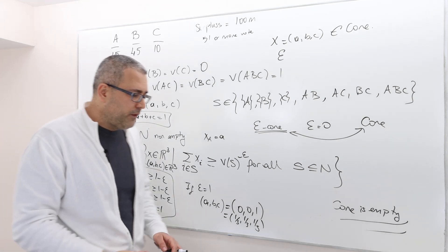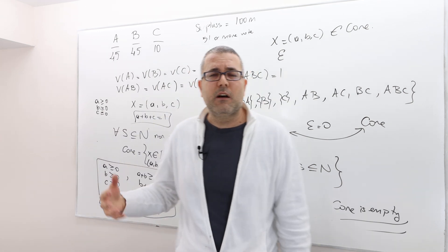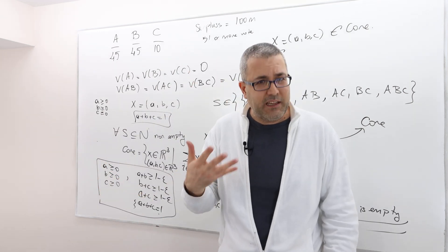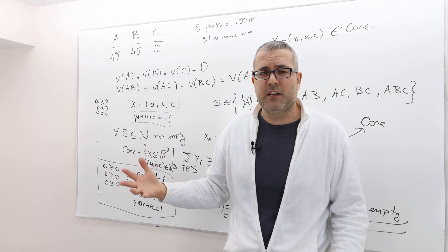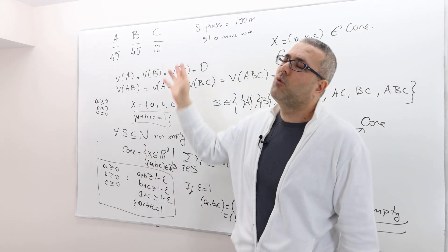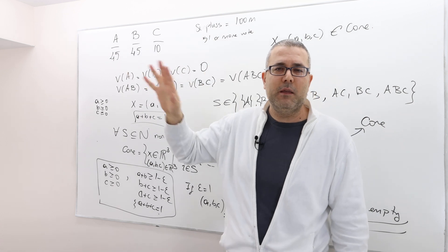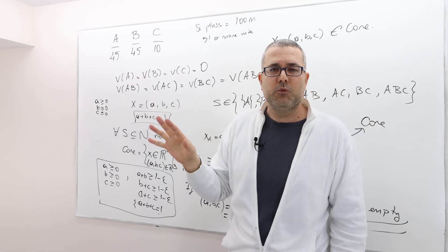The problem is, the problem with cooperative game theory is when the number of players increase. Imagine, instead of having three players, we have like five or 10 players. When it's a political party, maybe it's a horrible political situation. But some other problem where 10 players is just a reasonable number.